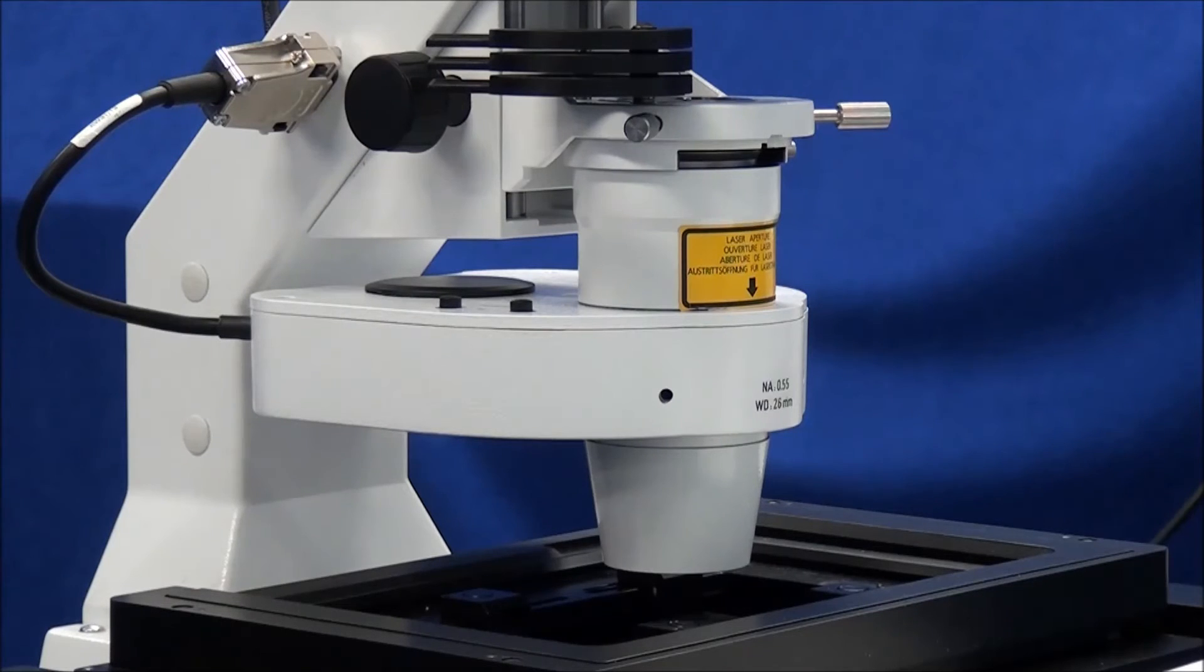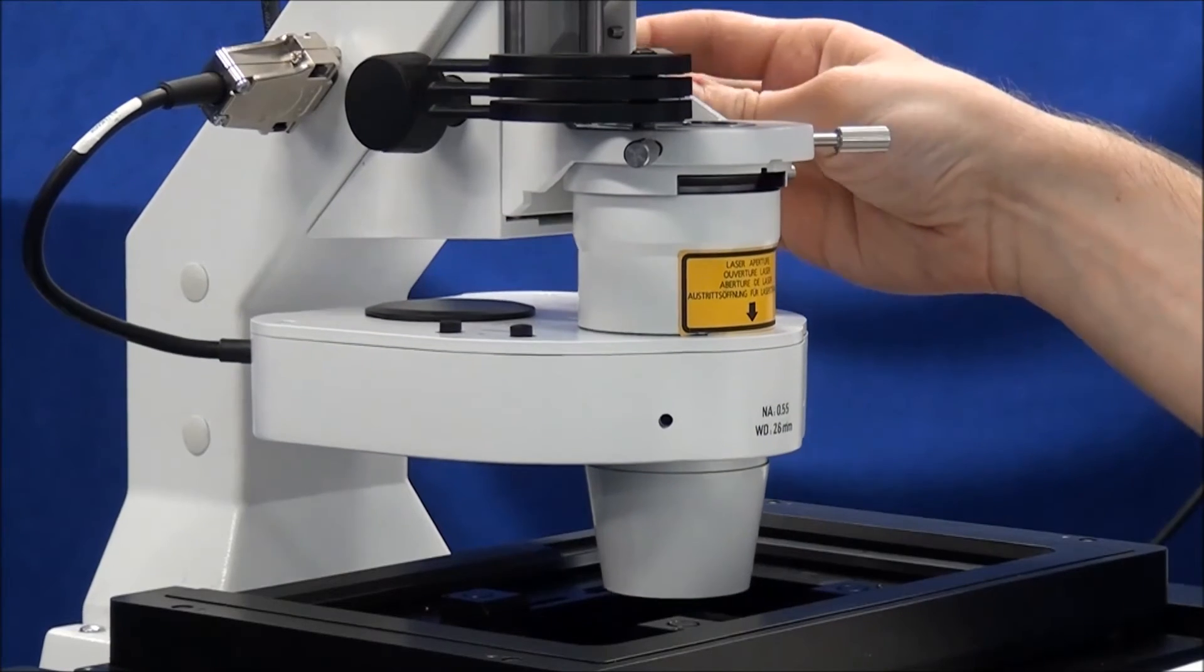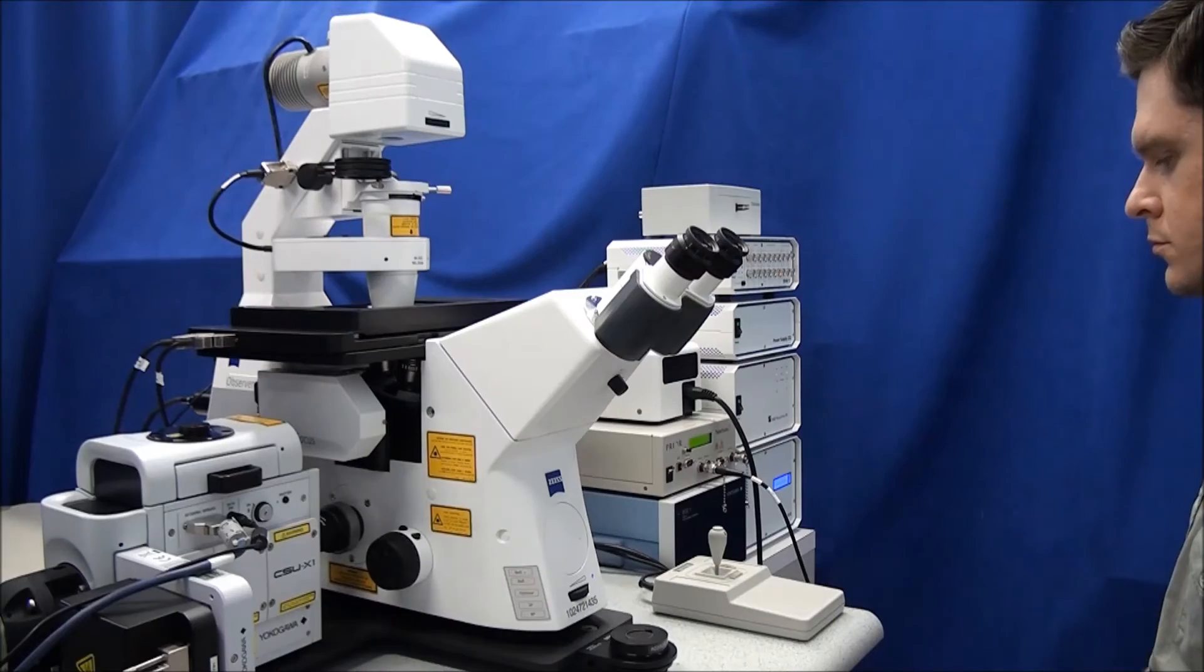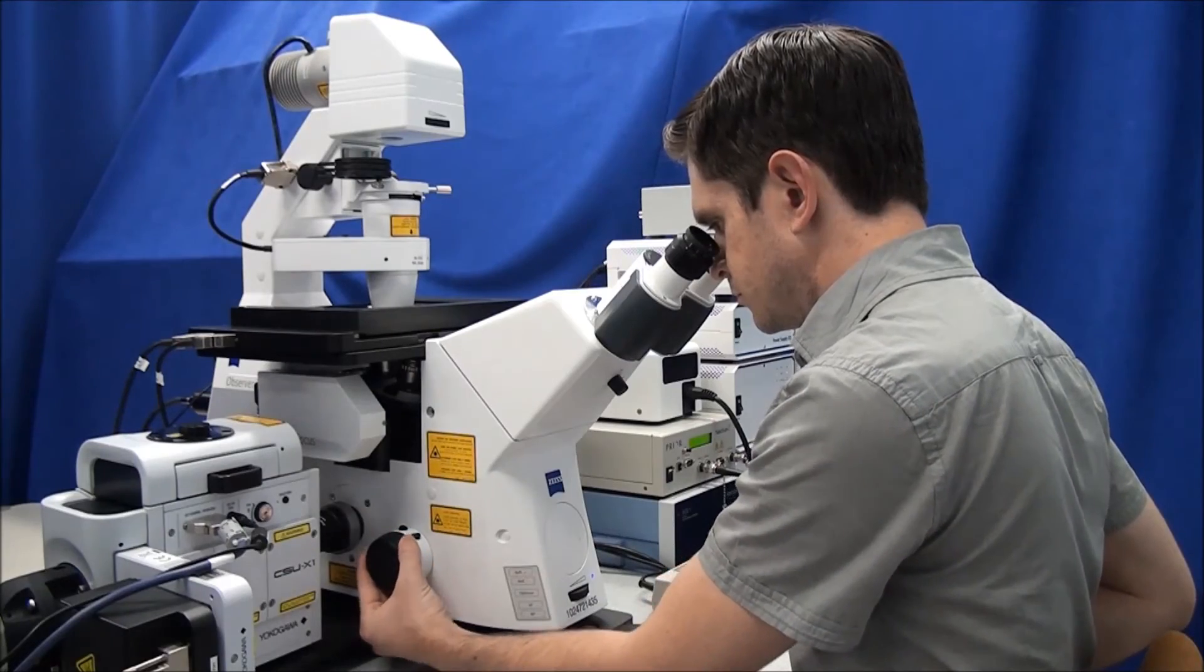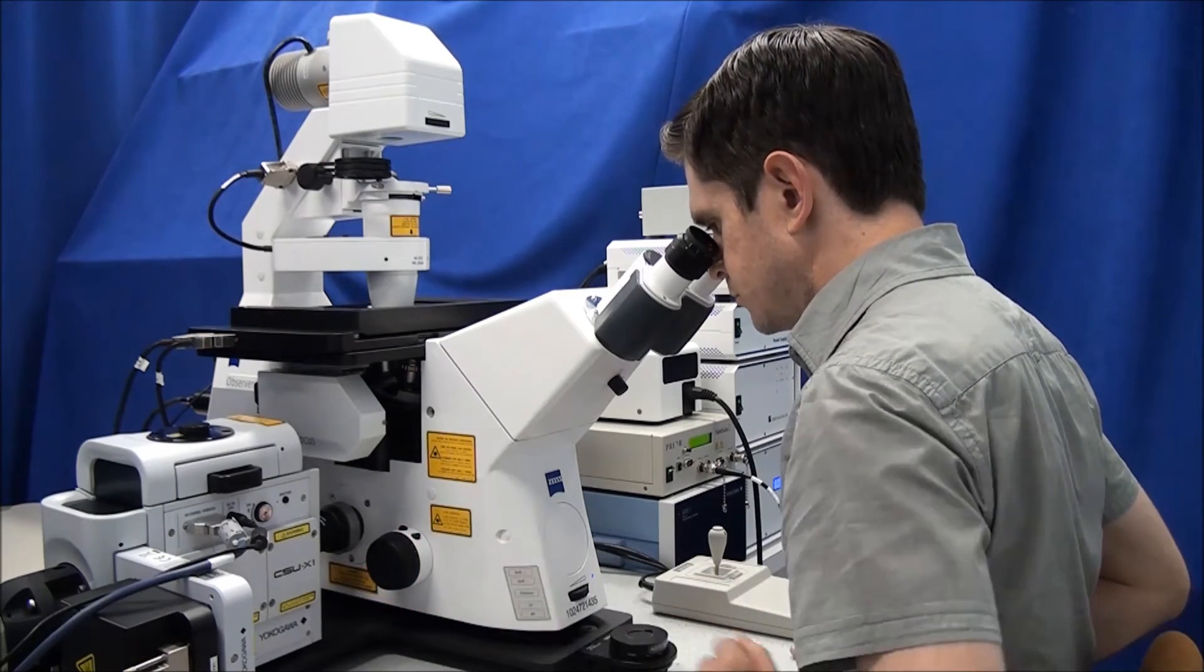Lower the condenser completely by rotating the condenser focus knobs. Look through the eyepieces. Focus on your specimen using the microscope focus knobs. Kohler alignment is based off of this objective focus. Make sure that your sample remains in focus for the rest of the alignment steps.